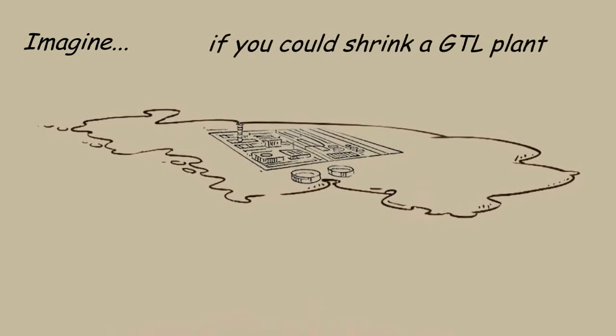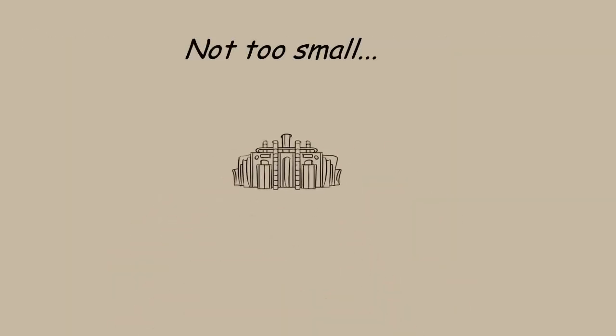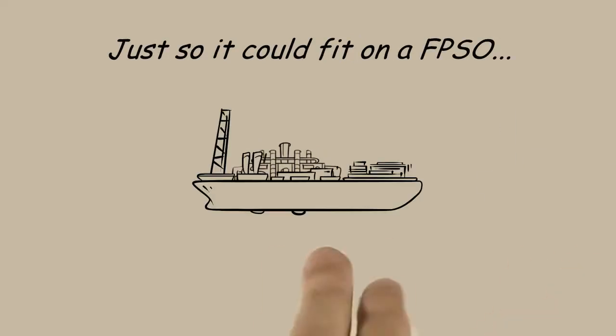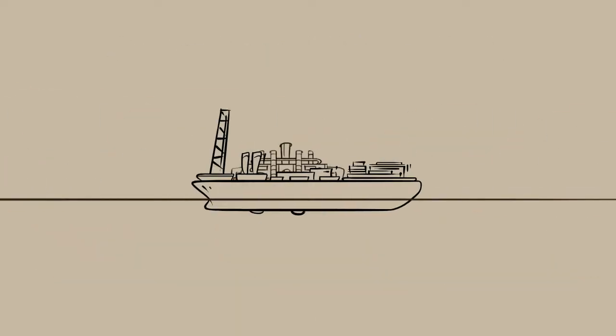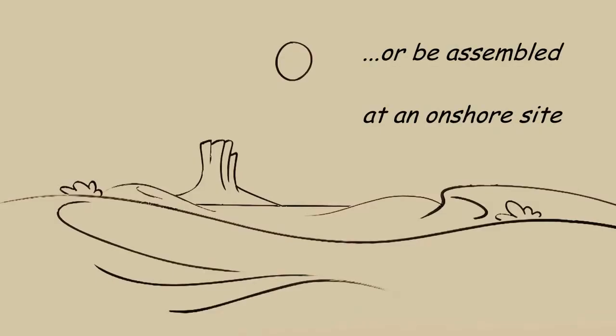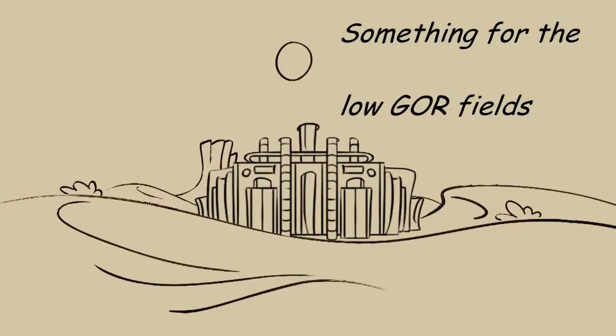Imagine if you could shrink a GTL plant, then you could take it to the well. Just small enough to fit an FPSO or be constructed on an onshore site. I mean, if you can do this in the ocean, how hard would it be in a desert? Just something for the low GOR field, say 50 million scuffs a day?